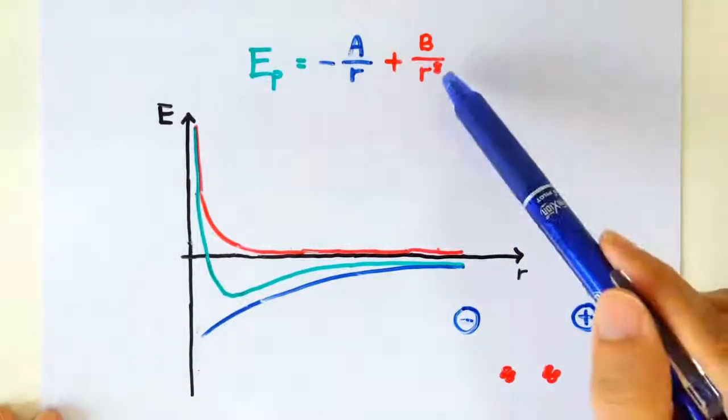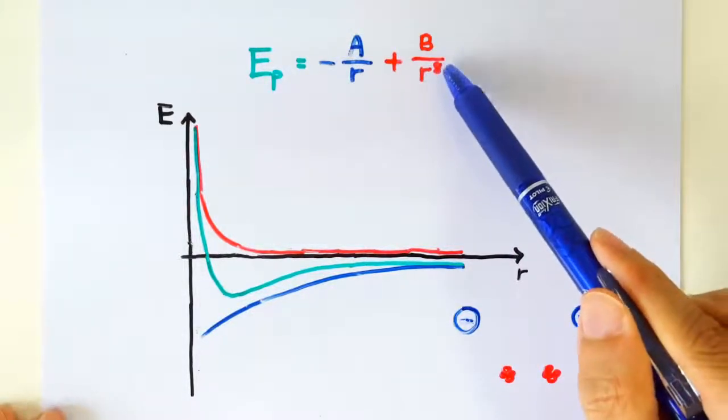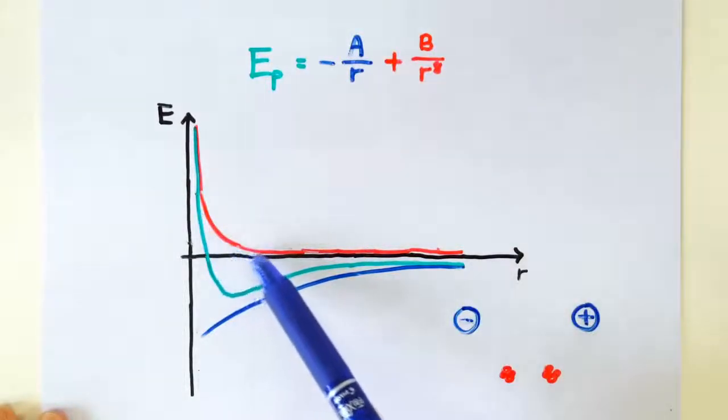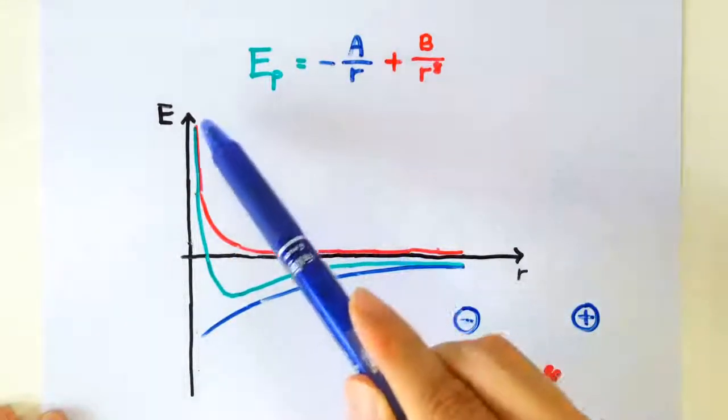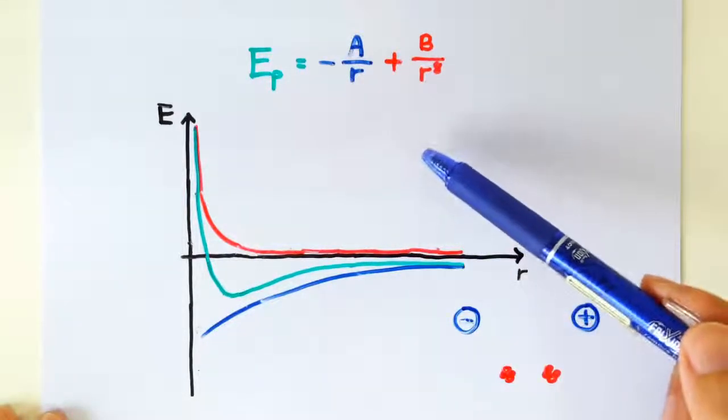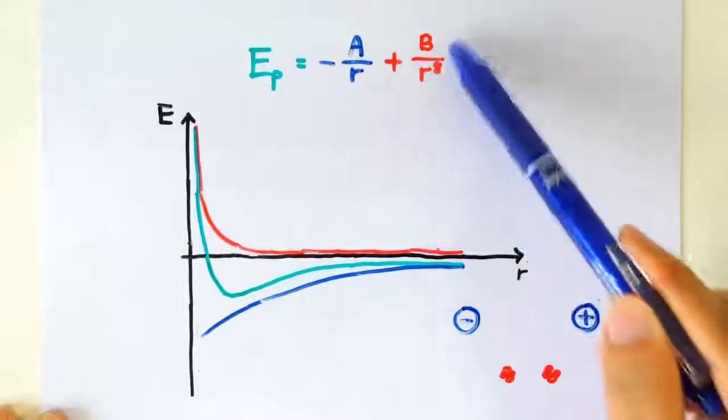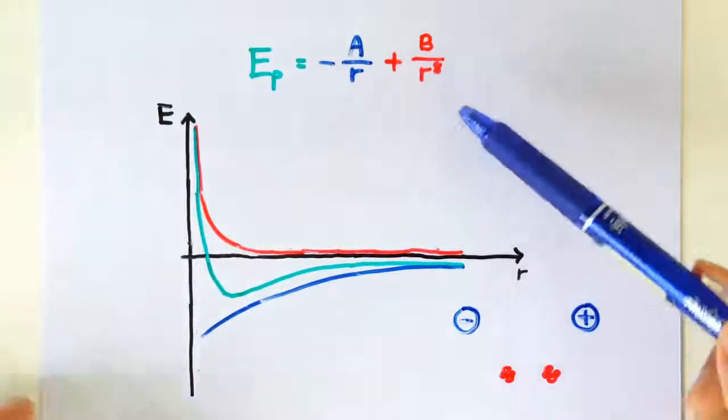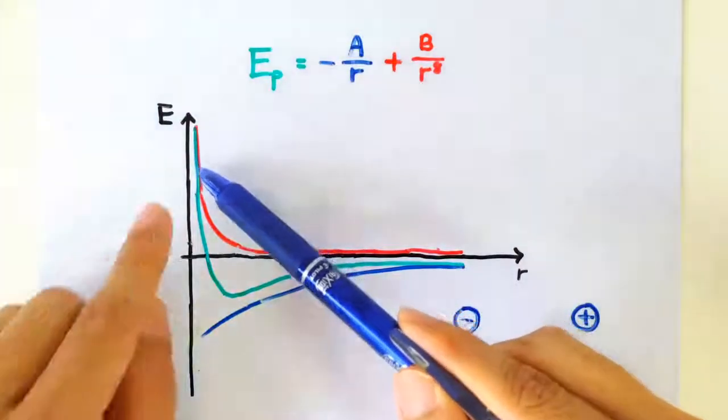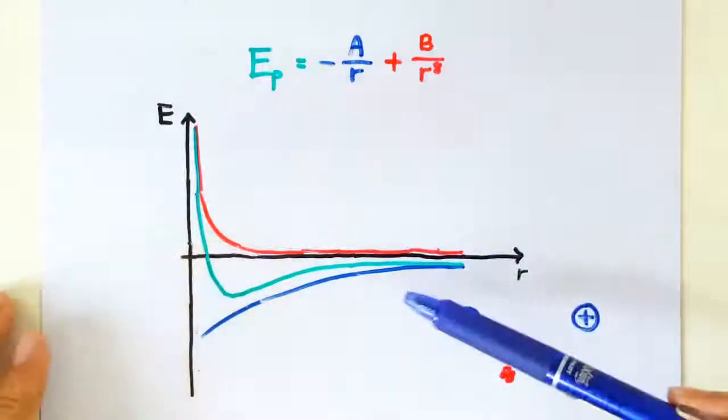The second feature has got to do with the power of 8 here. Because it's to the power of 8, we know that this term decreases very steeply. That's why a second feature we can quote is that this force, the force that's related to this term, is a very short range force, meaning the force is very strong at very small separation. But at large separation, this force is basically negligible.